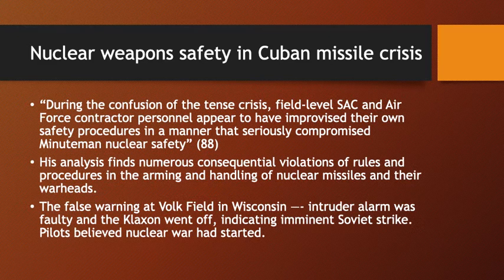During the Cuban Missile Crisis, Sagan finds fairly disturbing evidence of incidents and actions which contradict the idea that the system of control worked perfectly and all safety systems were completely implemented. An important quote: 'During the confusion of this tense crisis, field-level SAC and Air Force contractor personnel appear to have improvised their own safety procedures in a manner that seriously compromised Minuteman nuclear safety.'